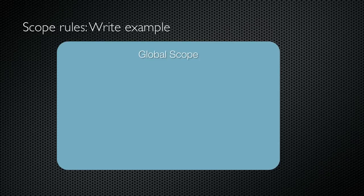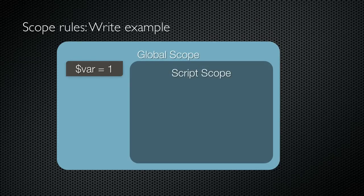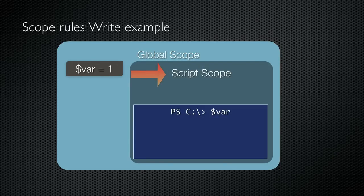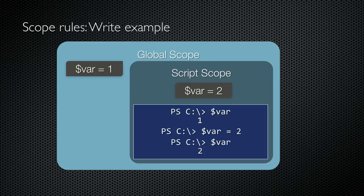Here's a more complicated example. Again, I have the global scope in which I set var equal to one. I run a script. Inside the script, I access var. The variable doesn't exist in the script, so the shell goes to the global scope and finds it. This results in one being displayed. Then the script sets var equal to two. This creates a new variable var inside the script scope. Now if the script tries to access var, it finds it in the script scope and uses that local variable, resulting in the display of two.